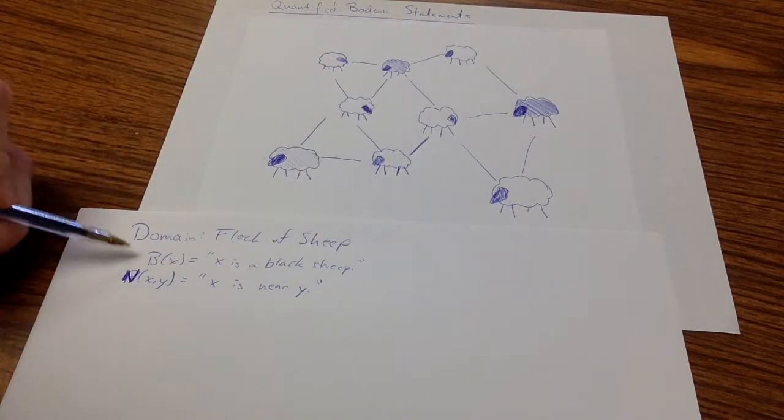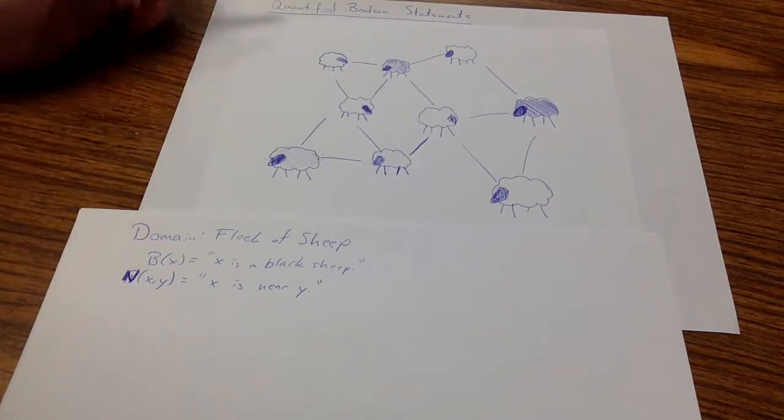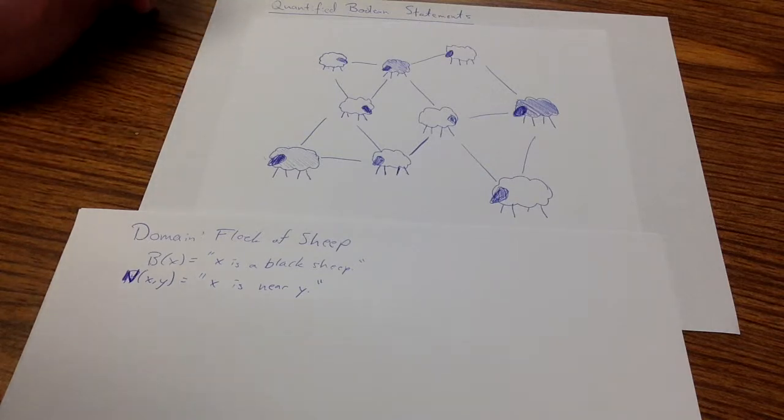So armed with these two propositions, Bx and Nxy, we're going to state a few things using quantified Boolean statements about this flock of sheep, and we're going to judge whether or not they're true.